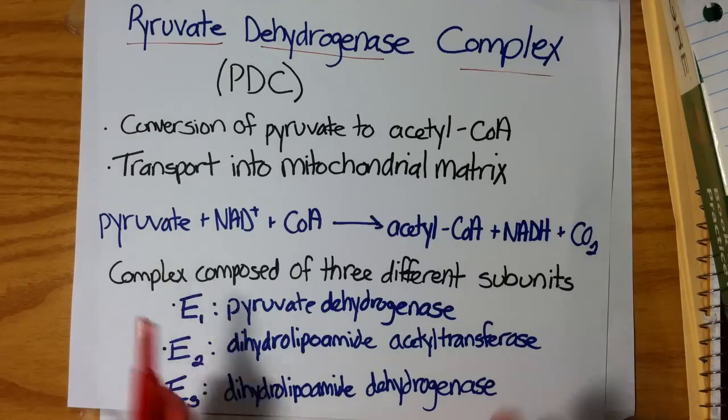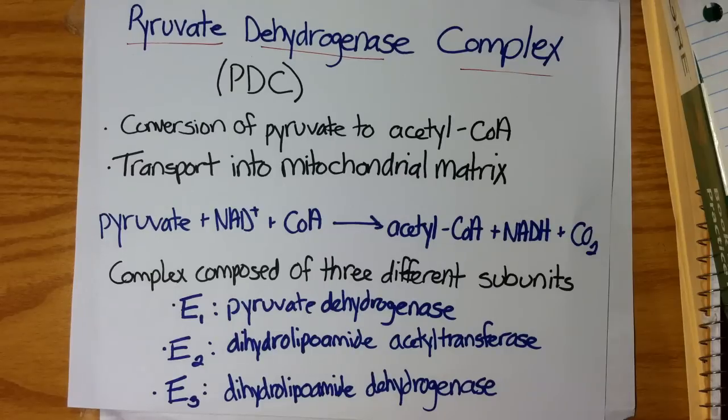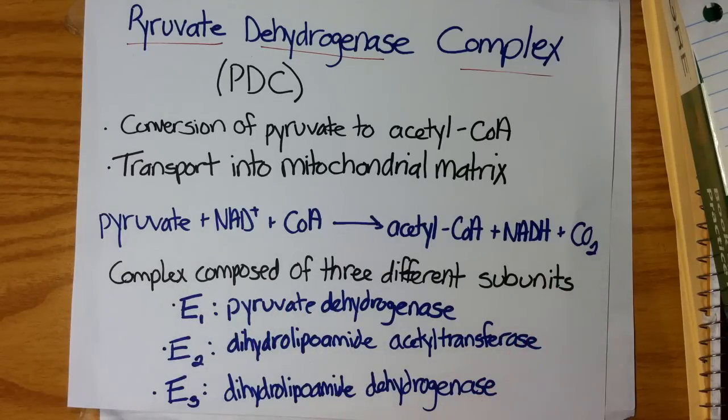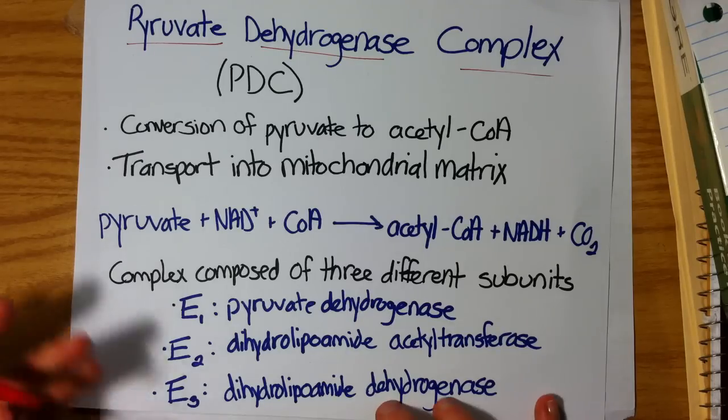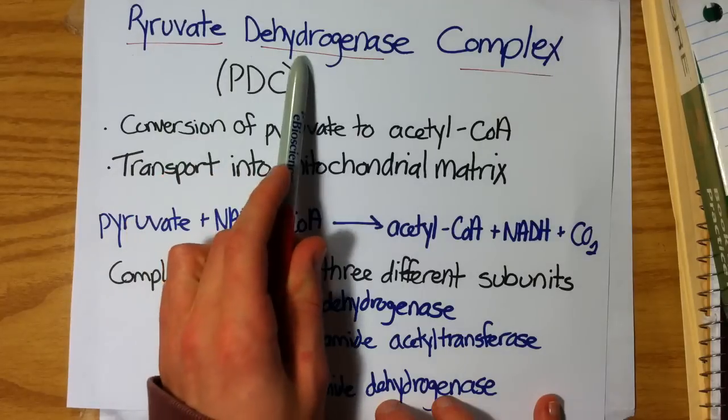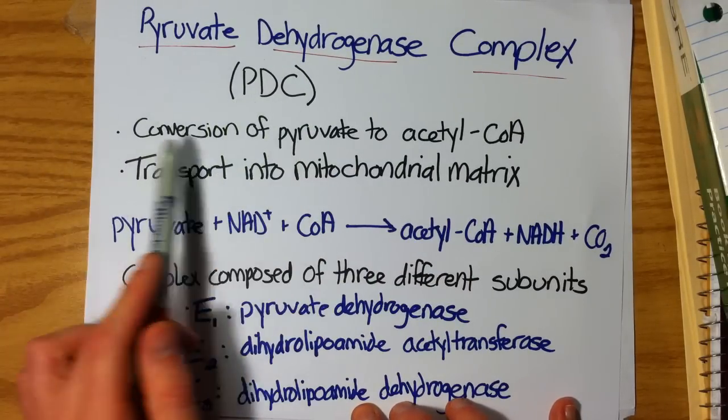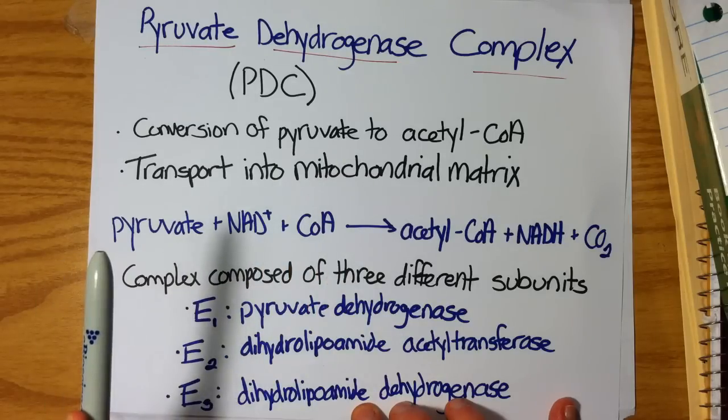The pyruvate dehydrogenase complex deals with the conversion of pyruvate made from glycolysis into acetyl-CoA. It's a step necessary connecting both glycolysis and the citric acid cycle for aerobic respiration. Here we have the pyruvate dehydrogenase complex, also known as PDC, which converts pyruvate to acetyl-CoA.